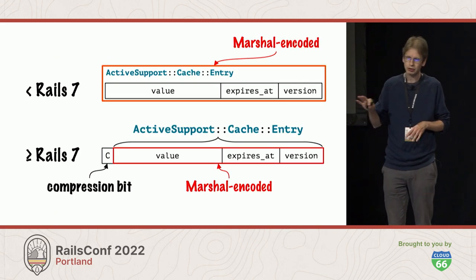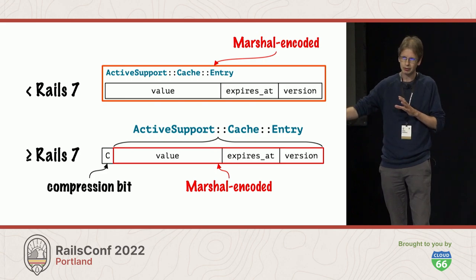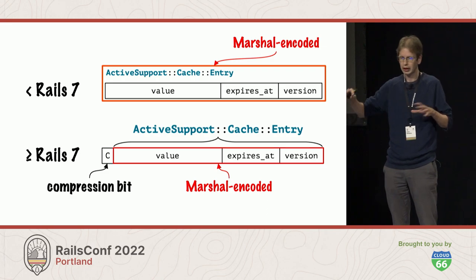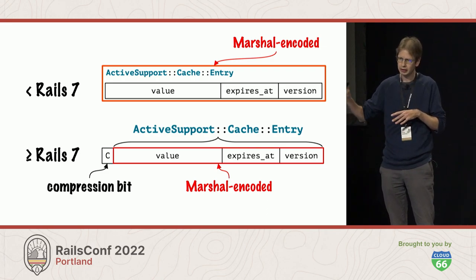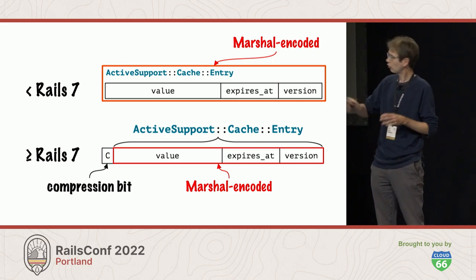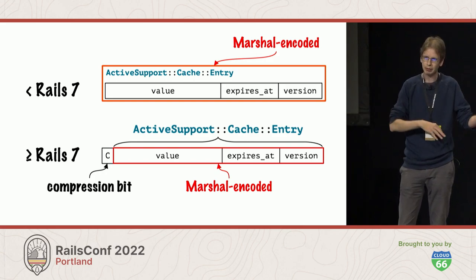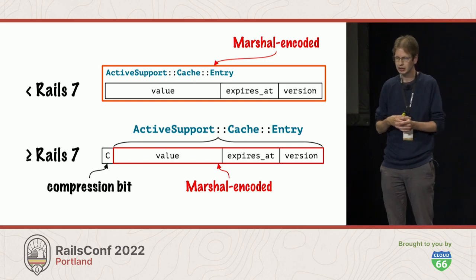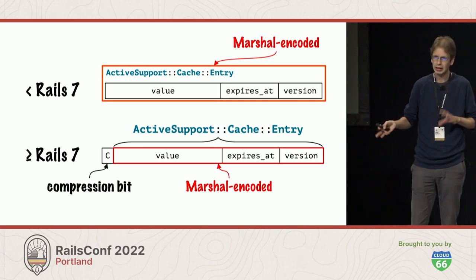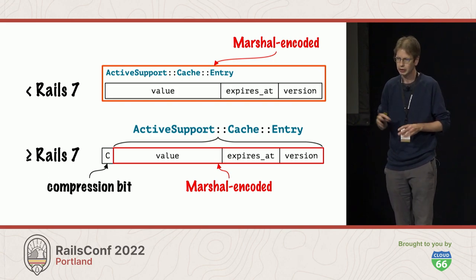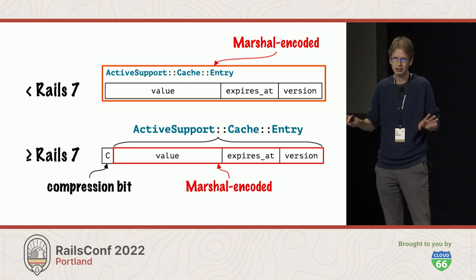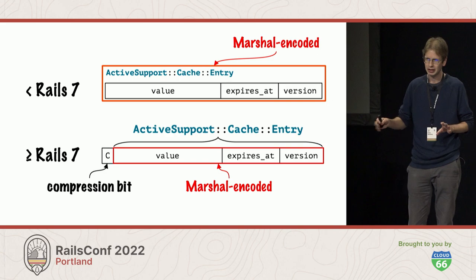There's a little more to it. When you cache data, it wraps the data with metadata — expiry and an optional version — into an ActiveSupport::Cache::Entry object. Before Rails 7, this whole object was encoded by Marshall and dumped, which was really inefficient. In Rails 7 it's more space-efficient, thanks to work Jean Boussier did related to this project. But all the issues with Marshall are still there, so everything I talk about today is still relevant in Rails 7.